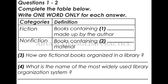All libraries have a system for organising and classifying non-fiction books. The most widely used system is the Dewey Decimal System. It was designed by an American librarian named Melvin Dewey. It is called a decimal system because it divides all non-fiction books into ten major categories, which are further divided into subdivisions.